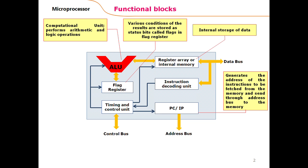To address or access the next instruction for execution, the microprocessor also has a program counter or instruction pointer register. This register is responsible for storing the offset address of the next instruction to be executed. When the microprocessor is currently executing an instruction, this register points to the next instruction. This offset address is then added with the segment starting address taken from one of the segment registers, and a physical memory address is computed.